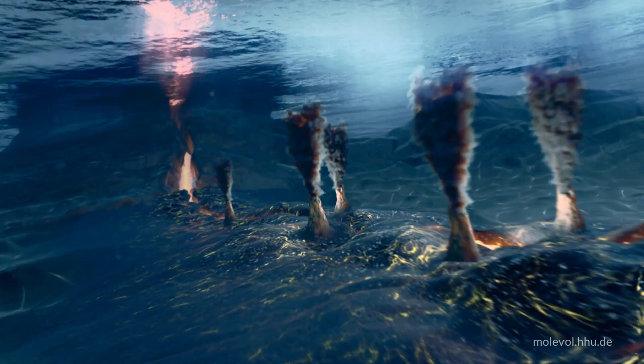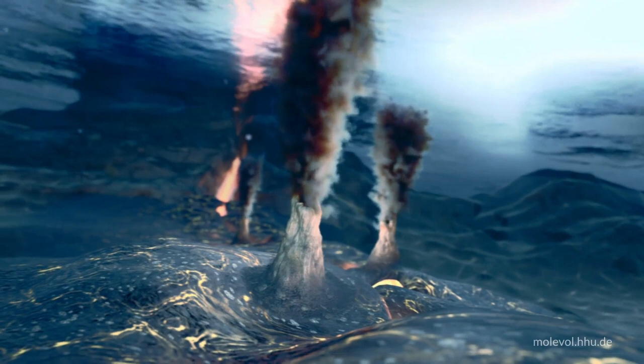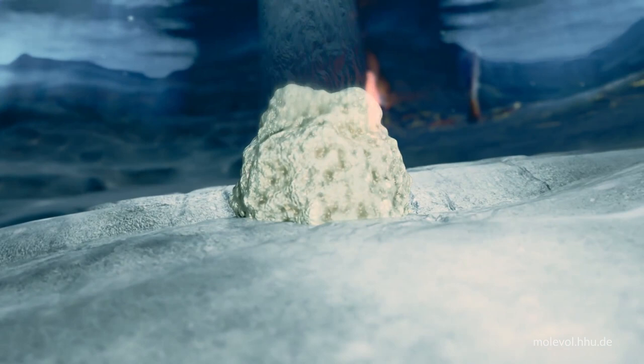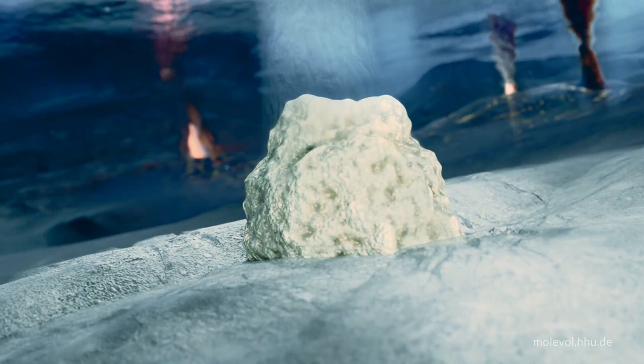Most people know about black smokers, the hydrothermal vents that emit 400 degree hot water and that sit on top of submarine spreading zones. But there are other kinds of submarine hydrothermal vents situated far away from spreading zones. These off-range vents are less well known, but they are extremely relevant for life's origin because of their internal chemistry.